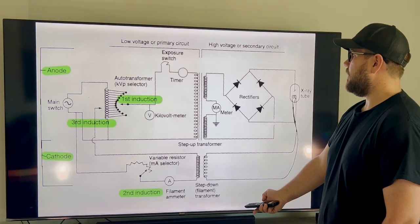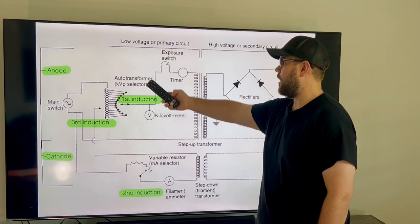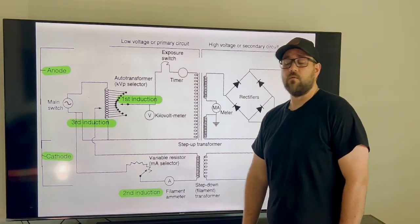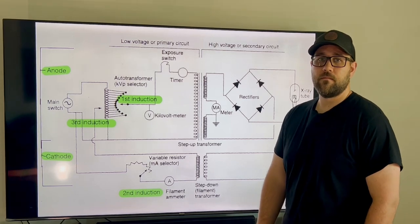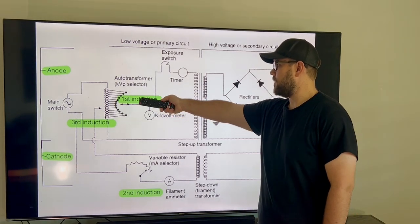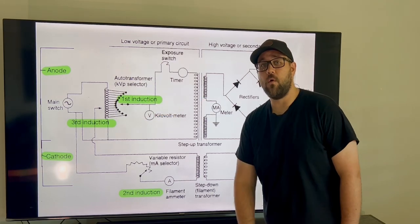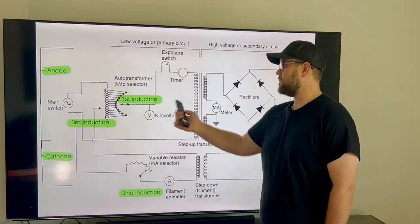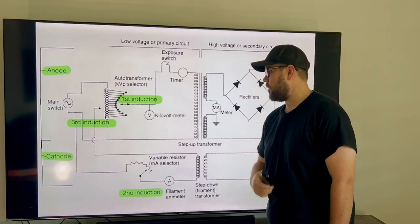So we're going to start off talking about our auto transformer, or where our first induction will be. So we input the 70 kVp, our machine reads that, and it'll actually allow the auto transformer to set itself to the appropriate coil that represents 70 kVp. And it'll be induced from there and read by our kilovolt meter.